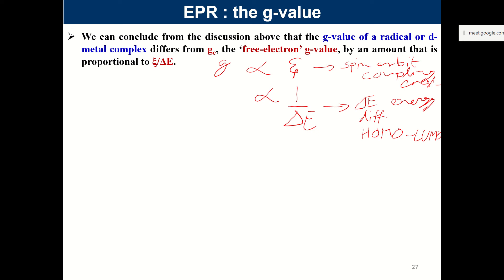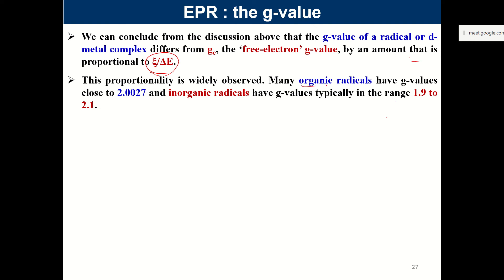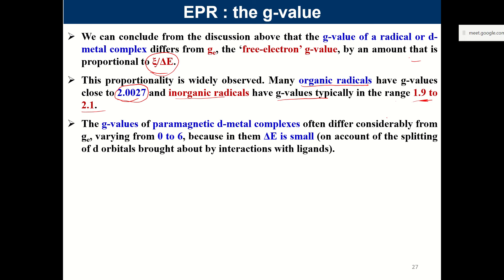The initial g value obtained for a free electron will be altered slightly by these factors. For organic radicals, the g value is very close to 2.0027. For inorganic radicals, g values are in the range 1.9 to 2.1. For paramagnetic d-metal complexes, the range is much bigger — from 0 to 6 — because the d orbitals split and the energies can vary widely with ligand interactions, giving a broad range of possible g values.